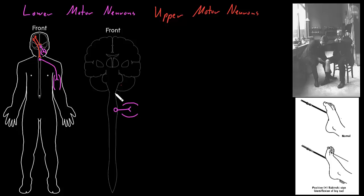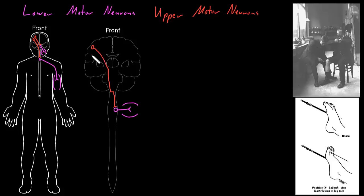The upper motor neuron that controls this lower motor neuron starts somewhere up in the cerebral cortex, in that layer of gray matter on the outside of the cerebrum. Its axon travels down to the deep white matter of the cerebrum, then down through the brain stem — through the midbrain, then the pons, then the medulla. At the point where the brain stem meets the spinal cord, at the bottom of the medulla, most of these axons cross over to the other side, and then travel down the other side of the spinal cord to synapse on the lower motor neuron and control it. This collection of upper motor neuron axons traveling from the cerebral cortex to lower motor neurons in the spinal cord is called the corticospinal tract.